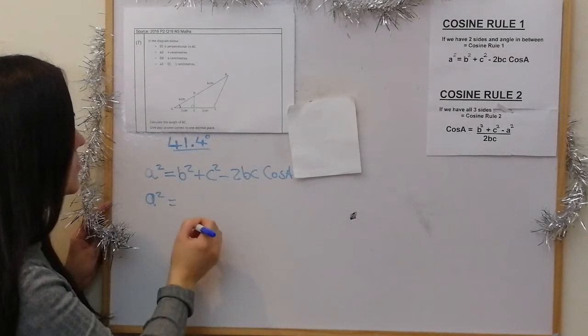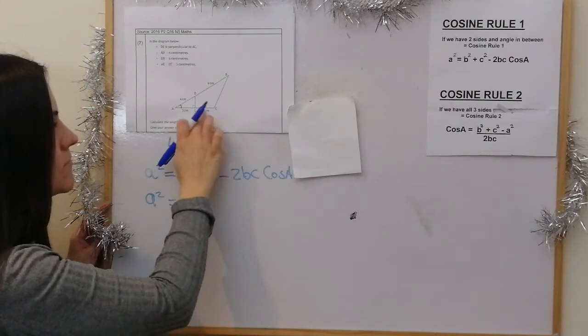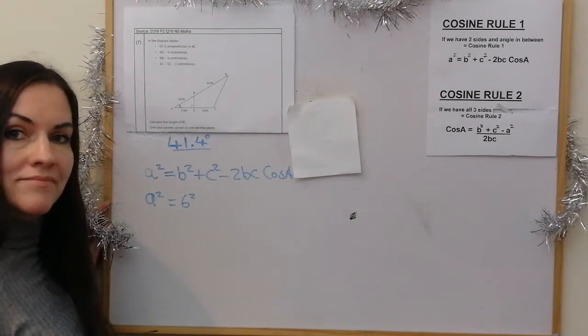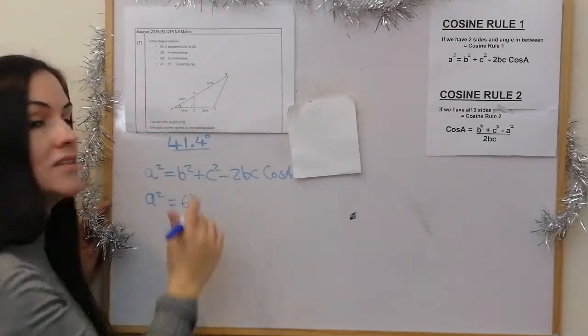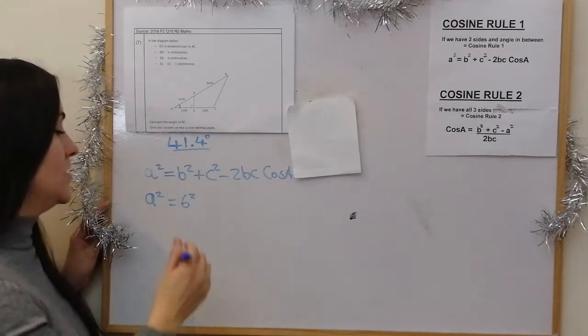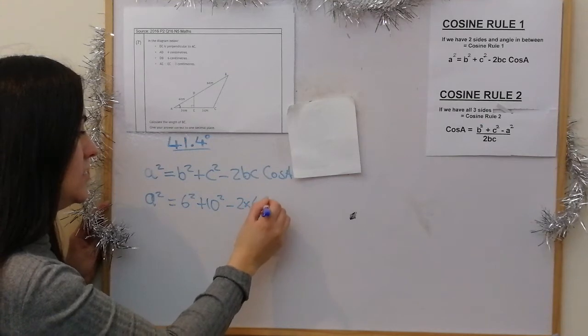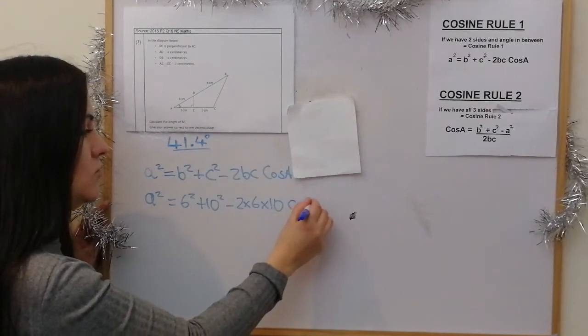So a squared equals, and we'll call this side b. So 6 squared, and it doesn't really matter which way round these two are. So one side's 10, one side's 6, but it doesn't matter which one's b and which one's c. 6 squared, add 10 squared, take away 2 times 6 times 10, and then it's cos 41.4.